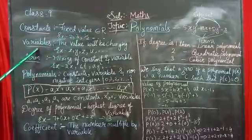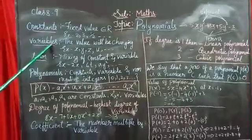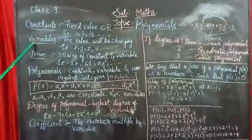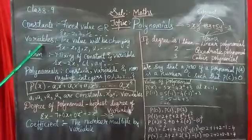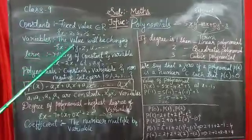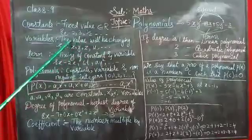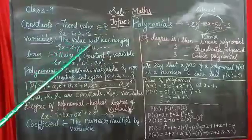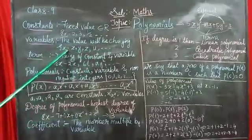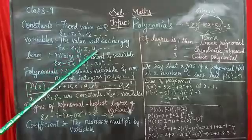Coming to the next, that is variables. What are variables? As the name suggests, it varies. The value will be changing. In variables, the value will be changing. For example, X, Y, Z, U, etc.